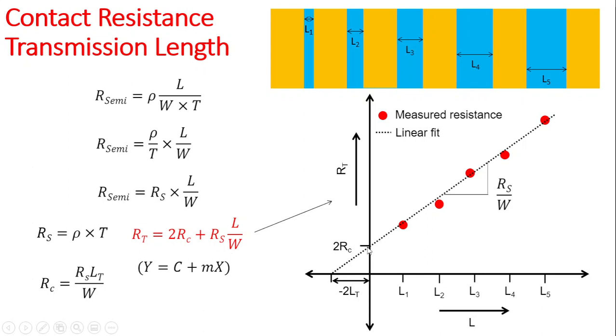In practice, what we do is try to collect resistance data as a function of channel length. So we use different channel lengths across the semiconductor and obtain the resistance values as shown in this figure here above.